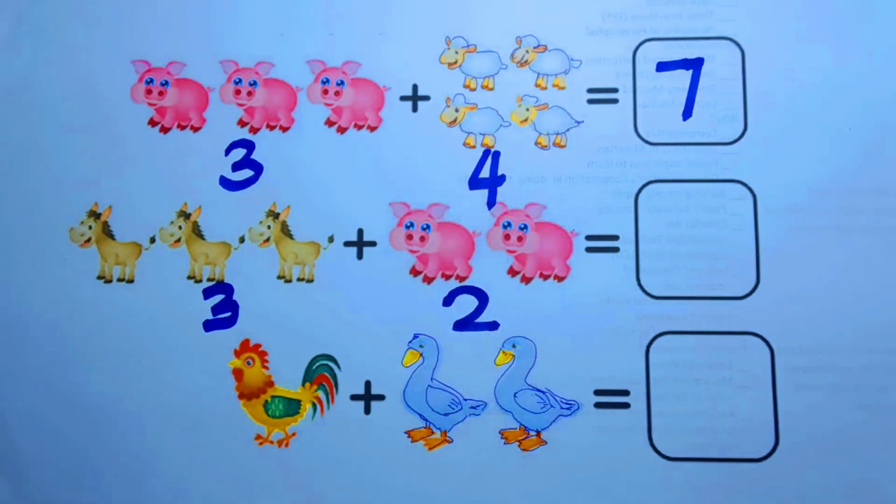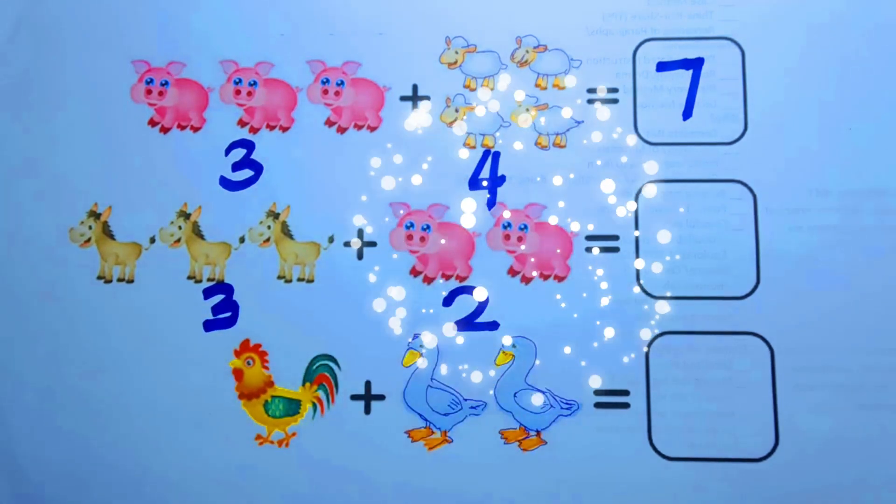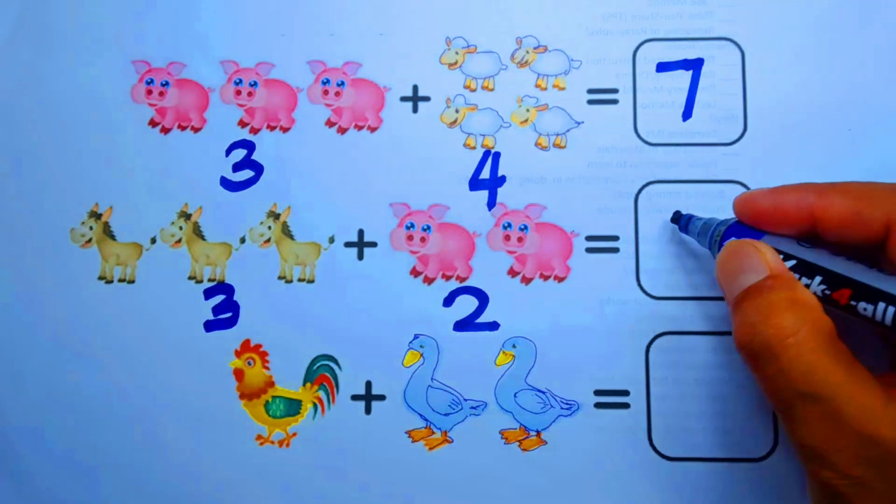Let's count the donkeys and the piglets together. One, two, three, four, five. There are all five. It means that three plus two equals five. Let's write five here.